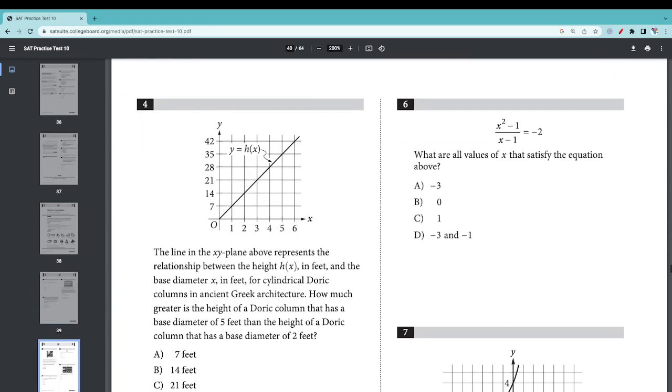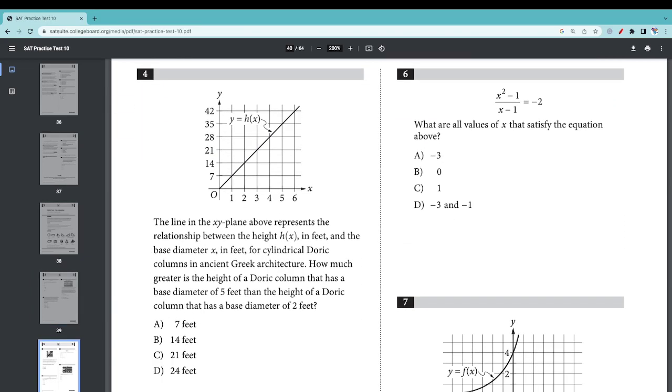Number 4: The line in the xy plane above represents the relationship between the height h(x) in feet and the base diameter x. How much greater is the height of a Doric column that has a base diameter of 5 feet than the height of a Doric column with a base diameter of 2 feet?